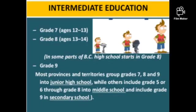Intermediate education covers grades seven through nine. Grade seven is for ages twelve to thirteen, and grade eight for ages thirteen to fourteen. In some parts of British Columbia, high school starts at grade eight. Most provinces group grades seven, eight, and nine into junior high school, while others group grade five or six through grade eight into middle school, placing grade nine in secondary school.